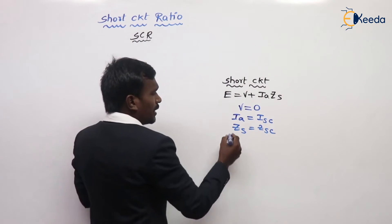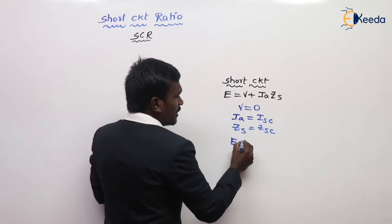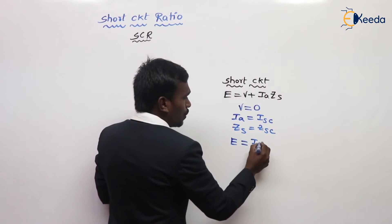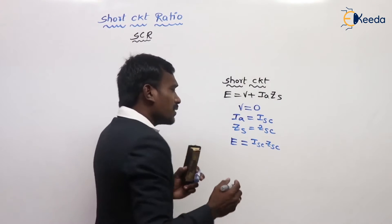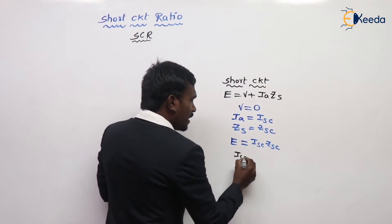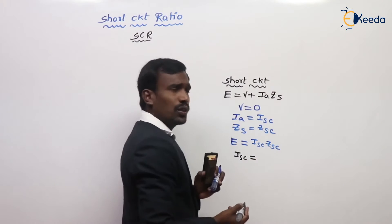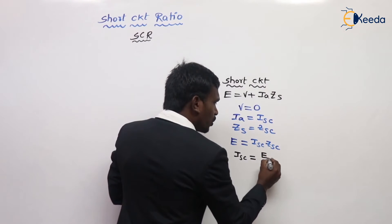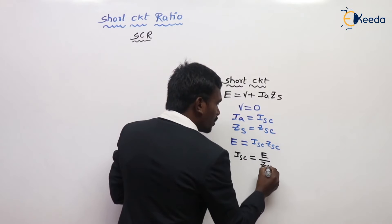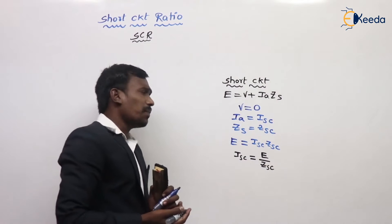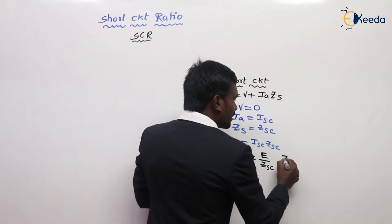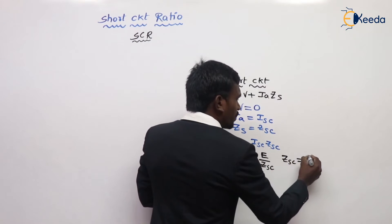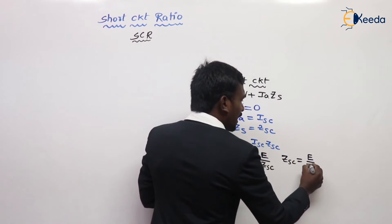Then, E equals ISC multiplied by ZSC. So ISC equals E divided by ZSC, and ZSC equals E divided by ISC.